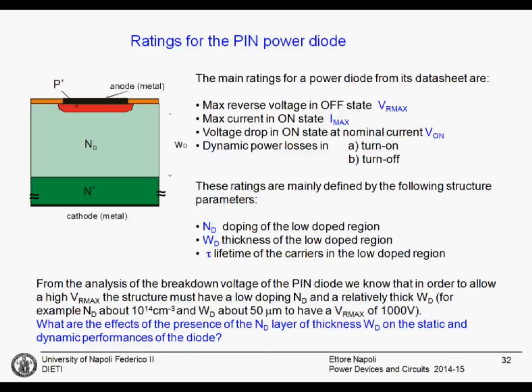There is also something not indicated here: the area of the diode. We can always increase the current flow by increasing the chip area, making a bigger diode. However, the cost of the diode will increase almost linearly with the silicon area.